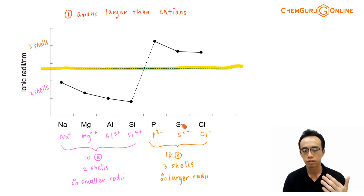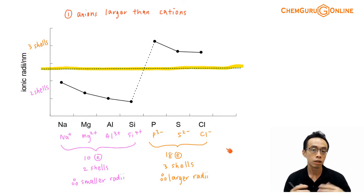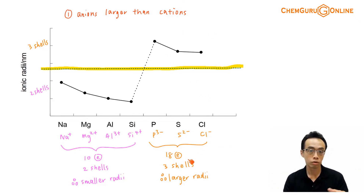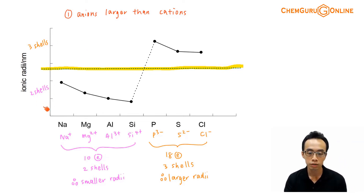For the anions — phosphorus forms P3−, sulfur S2−, and chlorine Cl− — all of them have 18 electrons and therefore 3 principal quantum shells are filled. This is why all anions are larger than all cations: anions have 3 shells while cations have only 2 shells, and more shells means a larger size.